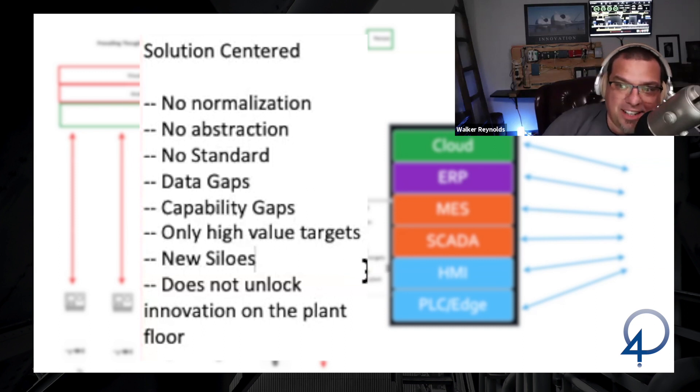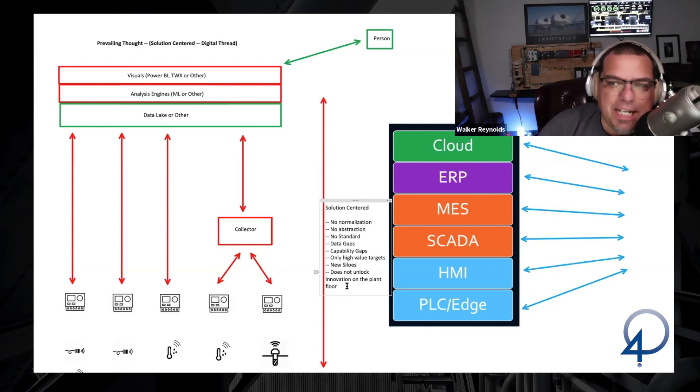You're creating new data silos by doing this. The data goes somewhere, but either it doesn't go there or he's not allowed to get it. You're creating a new silo. And the biggest problem with this architecture, the digital thread, is that it doesn't unlock innovation on the plant floor. And what do I mean by that?